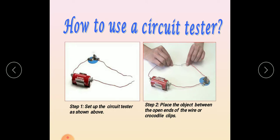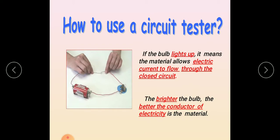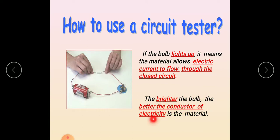We test with a solid good conductor first, and the bulb glows, confirming the tester is working. If the bulb lights up, it means the material allows electricity to flow through the closed circuit. The brighter the bulb, the better the conductor of electricity.